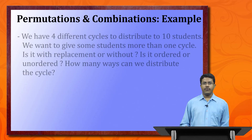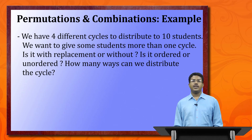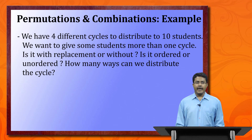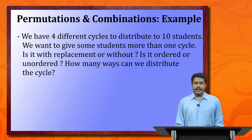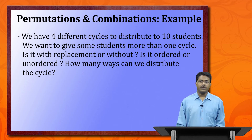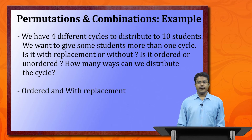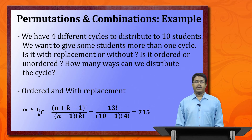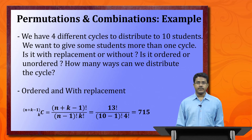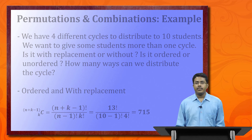Last example: 4 different cycles to distribute to 10 students, and some students can get more than one. Since cycles are different, it is ordered. Since a student can get more than one cycle, it is with replacement. We use the formula (n + k − 1)Ck, which gives 715 ways to distribute the cycles.